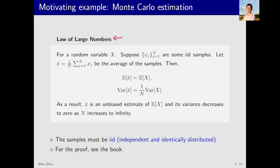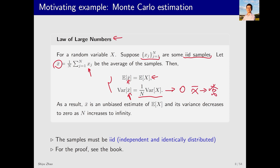What does the law of large numbers specifically say? Suppose I have iid samples — iid means independent and identically distributed. Then, with x-bar as the average, two conclusions follow. First, if we treat xj as a random variable, x-bar is also a random variable whose expectation equals the true expectation — thus x-bar is an unbiased estimate. Second, the variance of x-bar is 1 over n times the variance of x. As n tends to infinity, this variance tends to 0, meaning x-bar eventually converges to the expectation. The proof of this law can be found in my book.